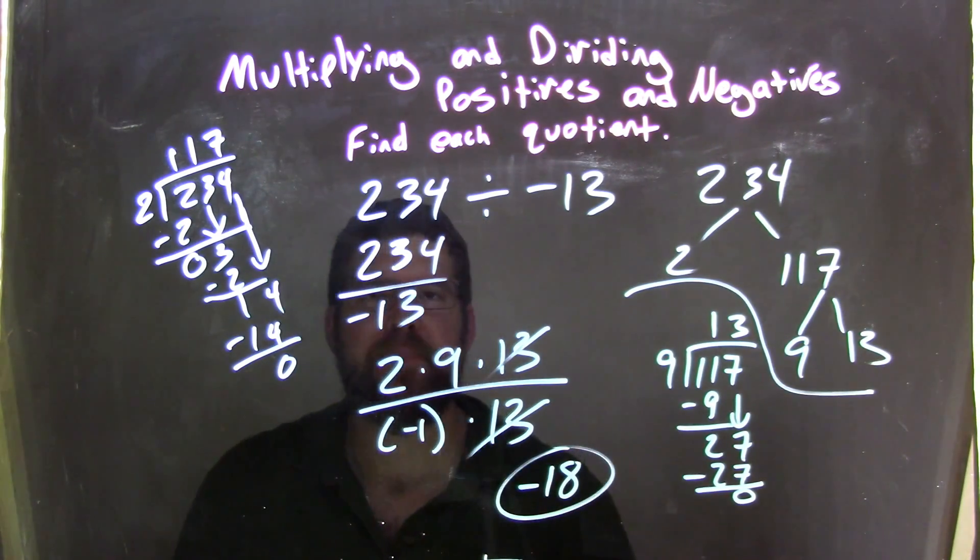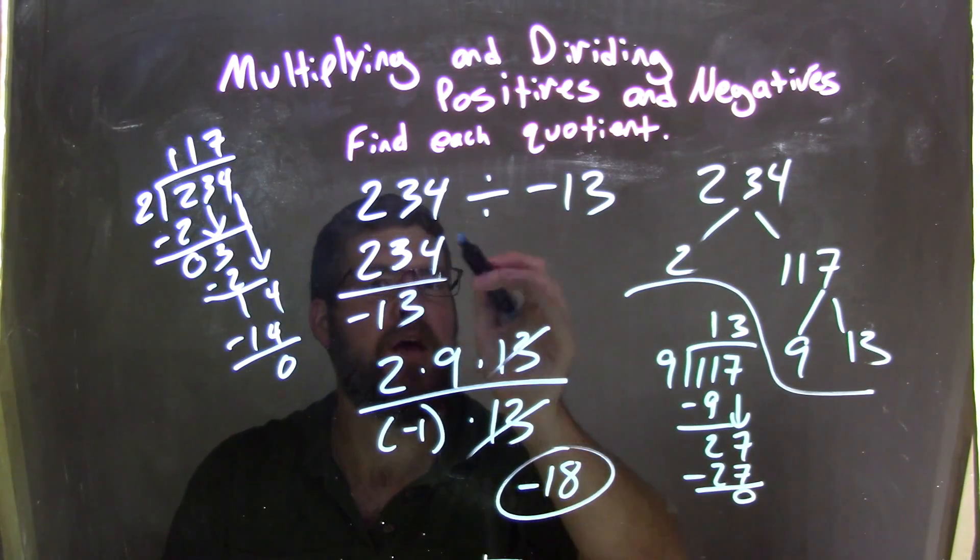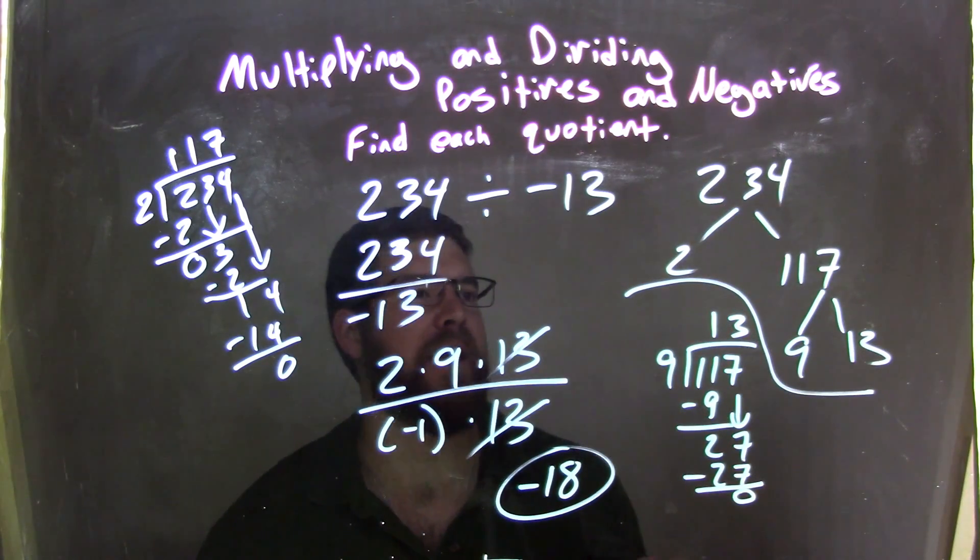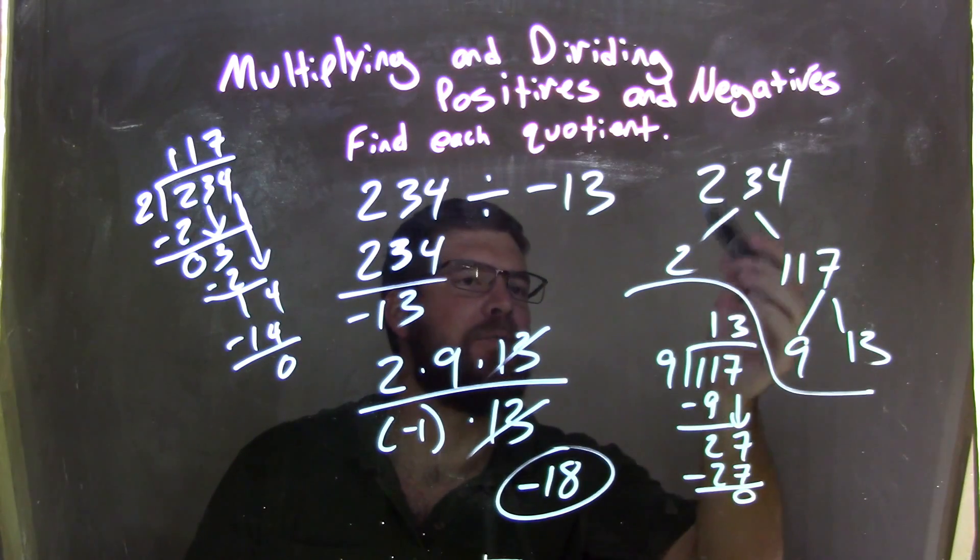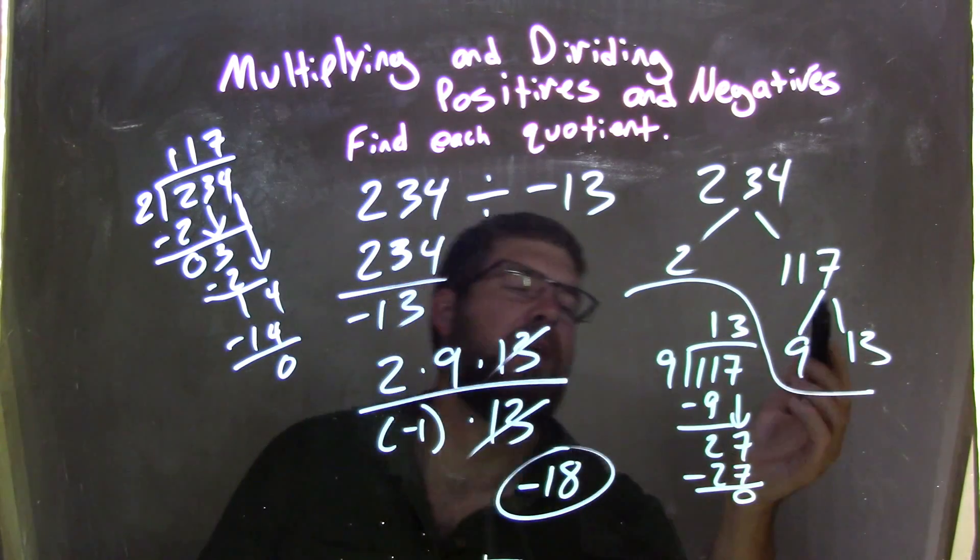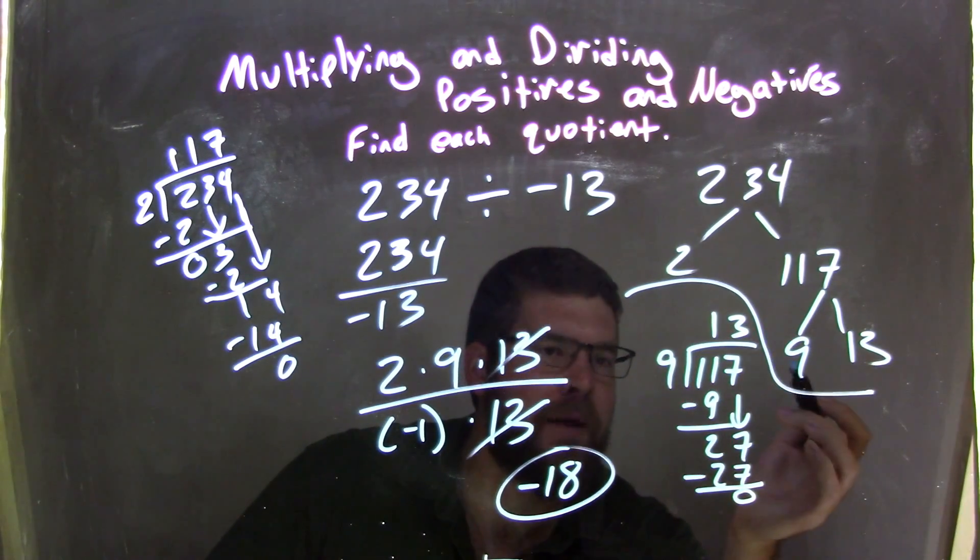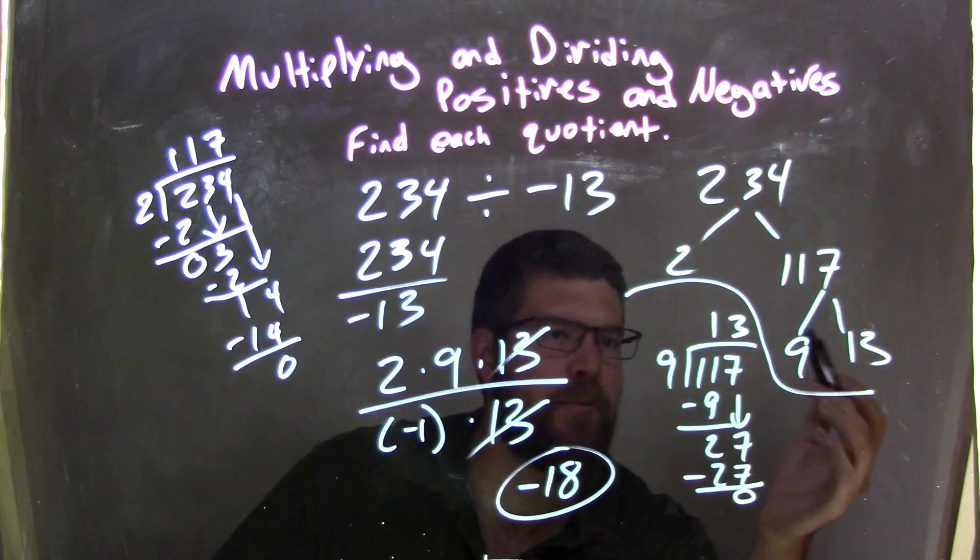So again, let's recap. We have 234 divided by negative 13, wrote it as a fraction right here. Now 234, I knew we could break down. 2 goes into 234, it was even, we found out to be 117. 117 was tricky, I didn't have anything off the top of my head, but I knew 9 went into it, kind of knowing from the answer. But I can just try different numbers and see which one goes in evenly.